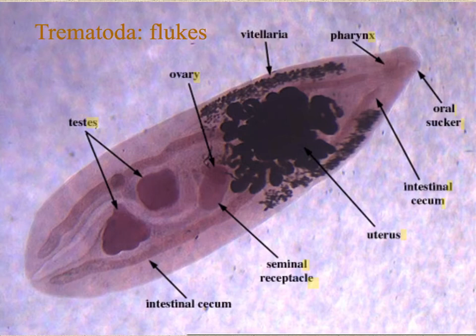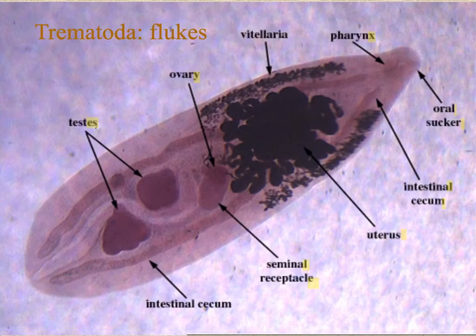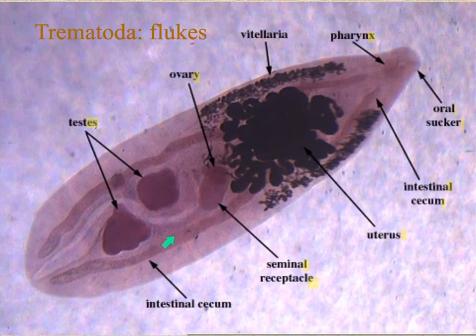Here we have our trematodes or flukes. The mouth is an oral sucker located here. We would have the pharynx branching out into the intestines. This area is all the uterus with the eggs, with some ovaries here, and moving down you still see the intestines and then the testes.